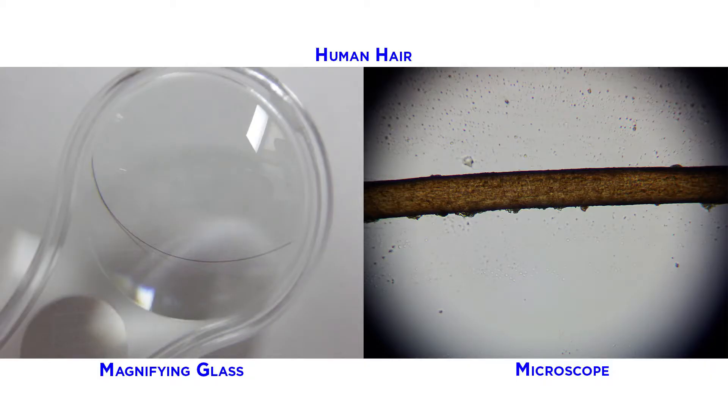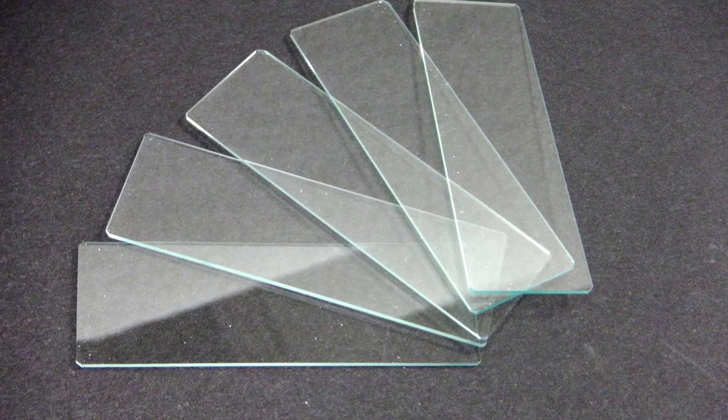Microscopes help you see things that are too small for you to see with the unaided eye. However, a microscope is different from a magnifying glass. Slides are necessary when you use a microscope.